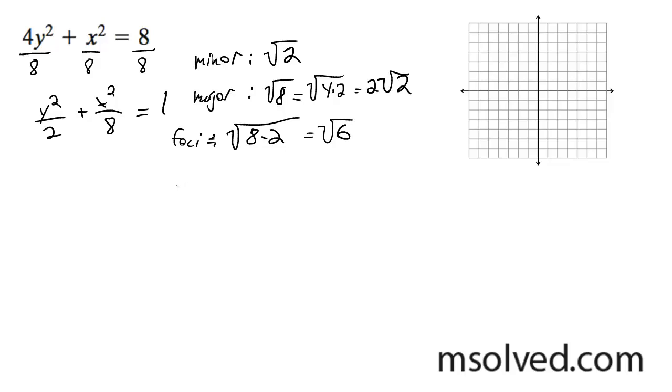Now, we can go ahead and graph based off of this. So for my minor axis, square root of 2, which is roughly 1.41. And then 2 root 2, which is going to be equal to just under 3.